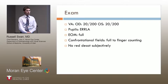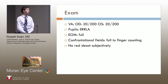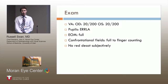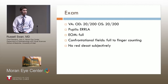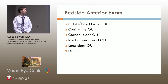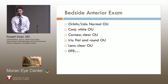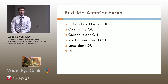On exam, when we saw her in the ER, she presented with a visual acuity of 20/200 in both eyes. Her pupils were equal and reactive to light and accommodation. She had full motility, no red desaturations, and her confrontational fields were full to counting fingers. Her bedside anterior exam was relatively unremarkable, but her posterior segment was quite notable.